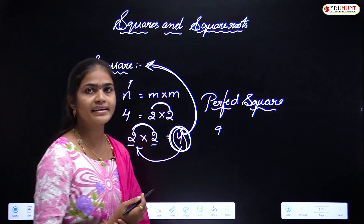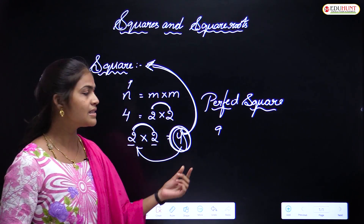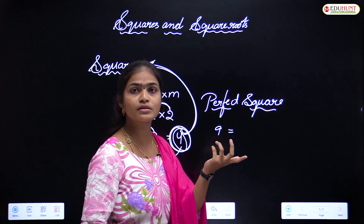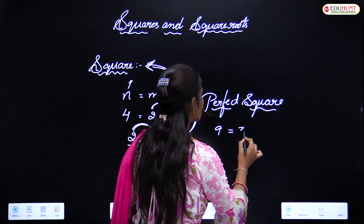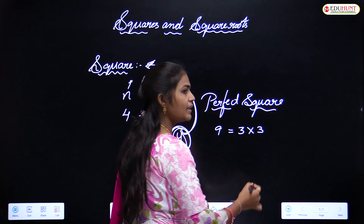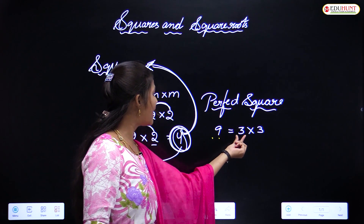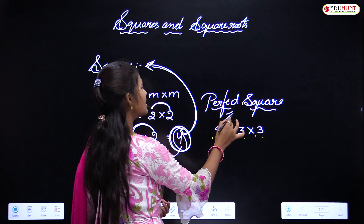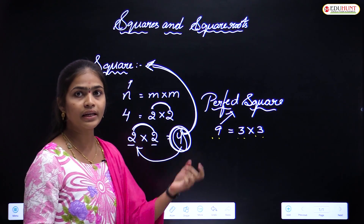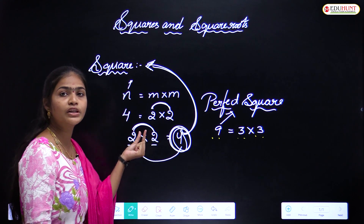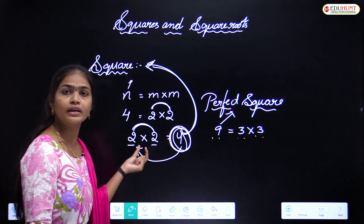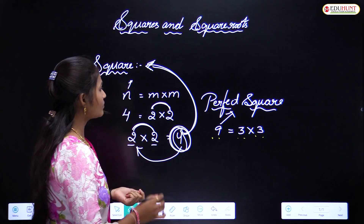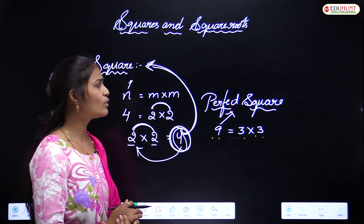Nine is a perfect square. Nine can be expressed as the product of two equal factors: three into three equals nine. So a number which can be expressed as the product of two equal factors is called a perfect square, and that product of two equal factors is called a square.